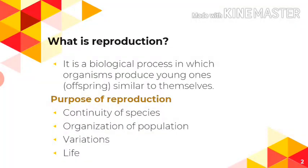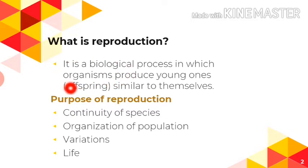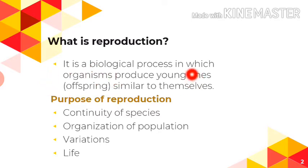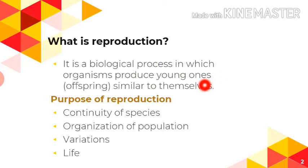Reproduction is the biological phenomenon in which organisms produce their young ones. The organisms act as parents and produce young ones — we can also use the term 'offspring' for the young ones. This is basically the process of production of young ones or children through parents.